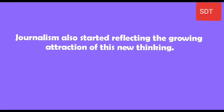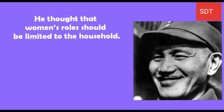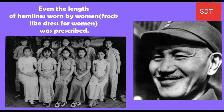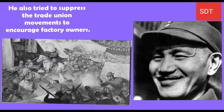Chiang was a conservative and he encouraged women to have the four virtues of chastity, appearance, speech and work. He thought that women's role should be limited to the household. Even the length of hemlines worn by women was prescribed. He also tried to suppress the trade union movements in order to encourage factory owners.